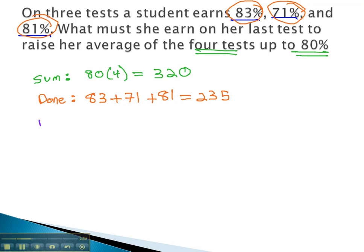So in order to reach this goal of 80%, what does she need? Well, 320 is the total, 235 is what we already have. We simply need to subtract what we are shooting for and what we've already got done.